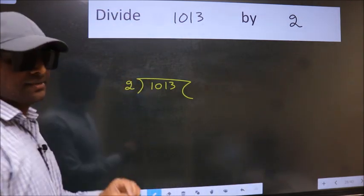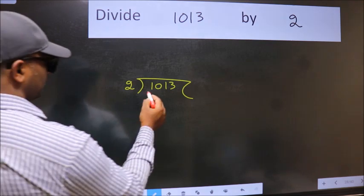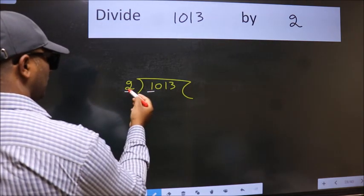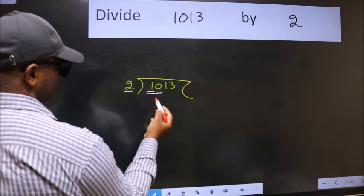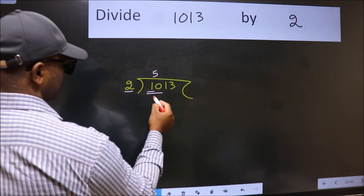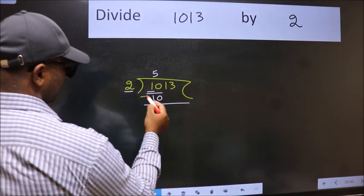This is your step 1. Next, here we have 1 and here 2. 1 is smaller than 2. So we should take two numbers, 10. When do we get 10 in 2 table? 2 5s 10. Now we should subtract. We get 0.